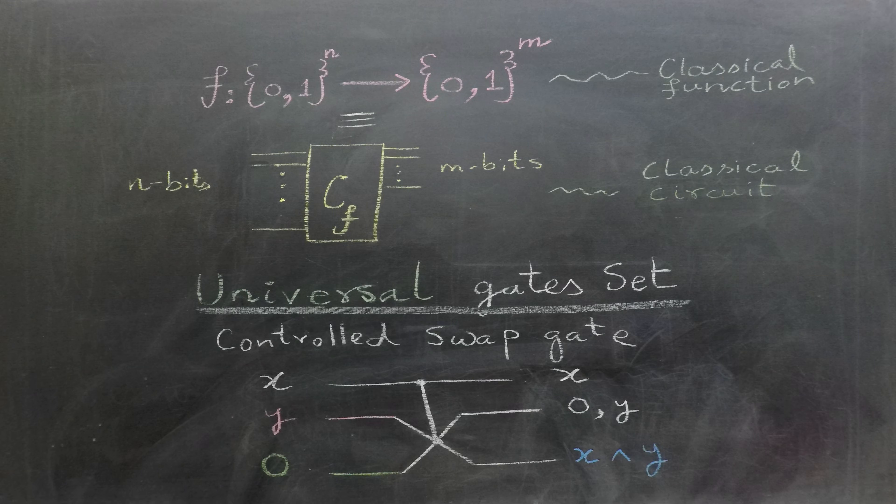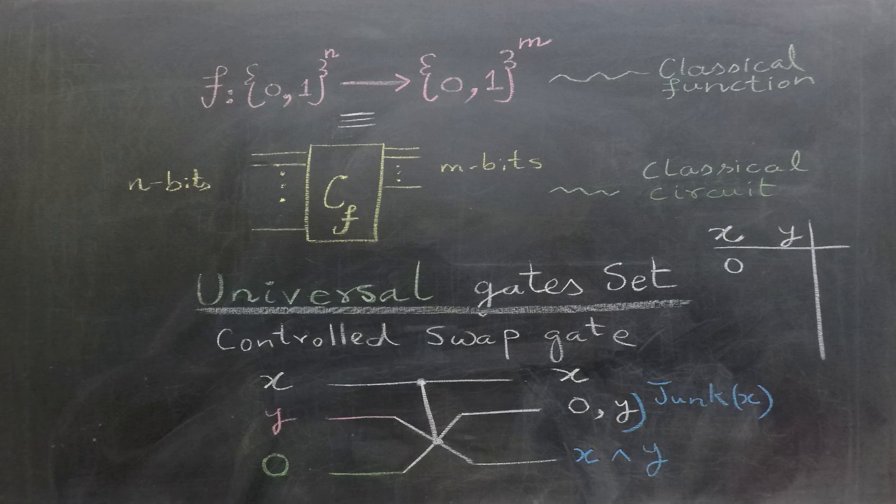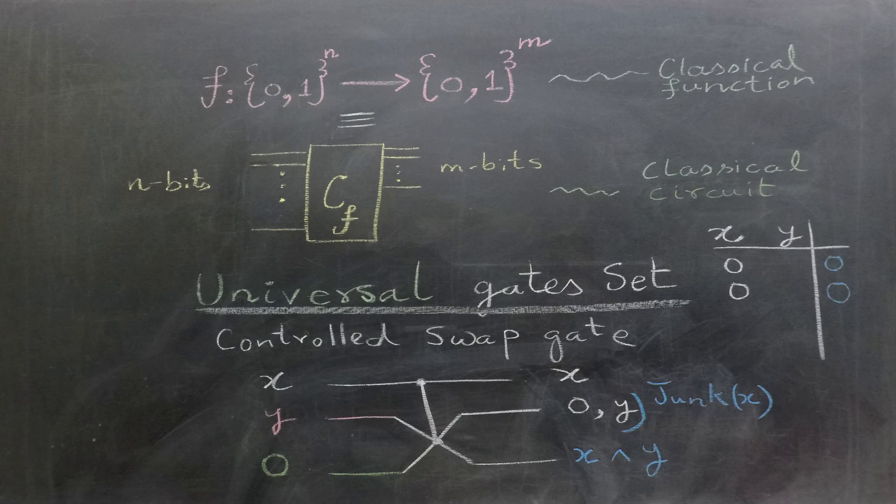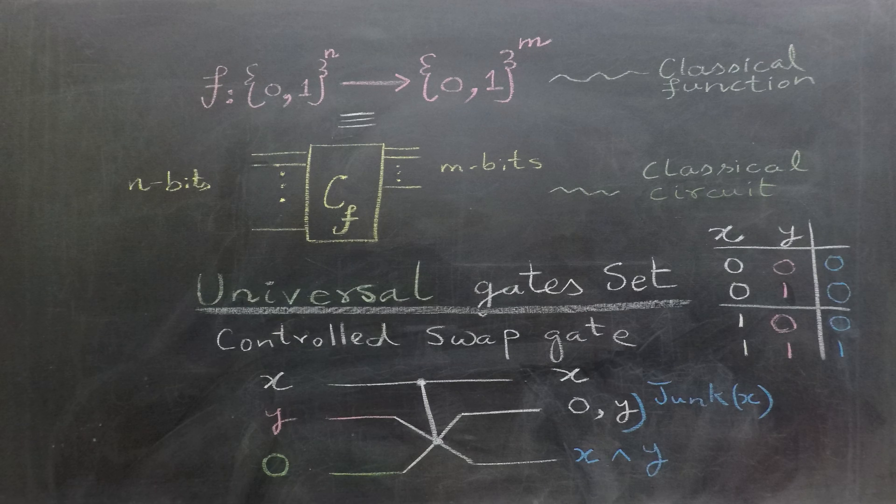We often refer to the second output as junk which is a function of x. To verify if the third output is indeed x and y, let's create a truth table. Notice that when x is 0, our third output will be 0 regardless of the value of y. In contrast, when x is 1, our third output will be equal to y. Thus, our third output will be equal to 1 if and only if both x and y are 1, which precisely mimics the behavior of an AND gate.